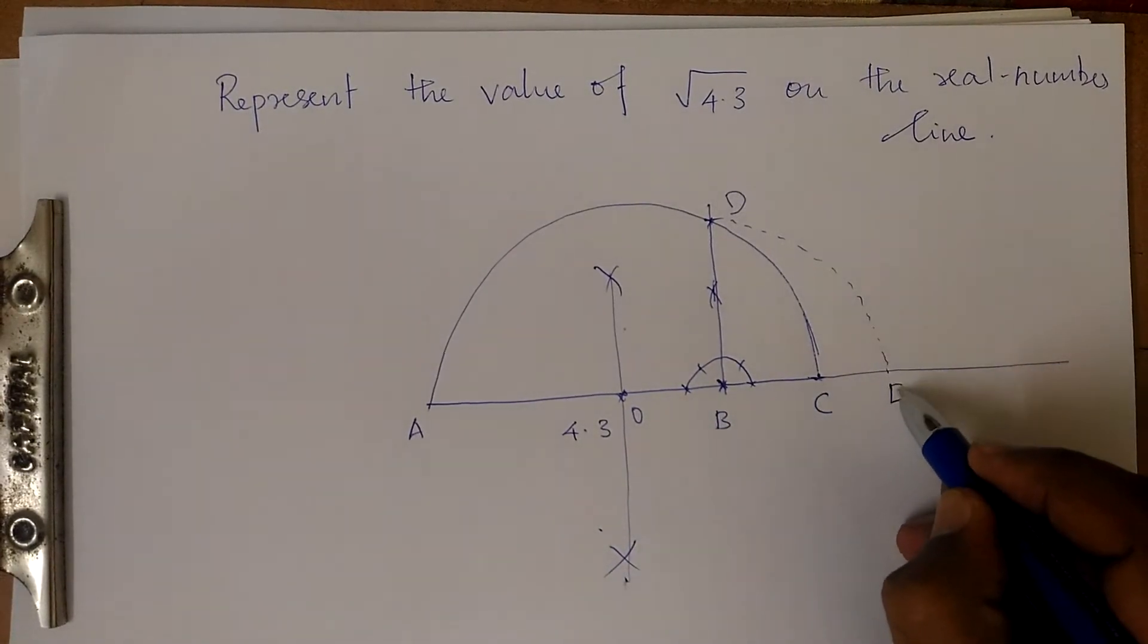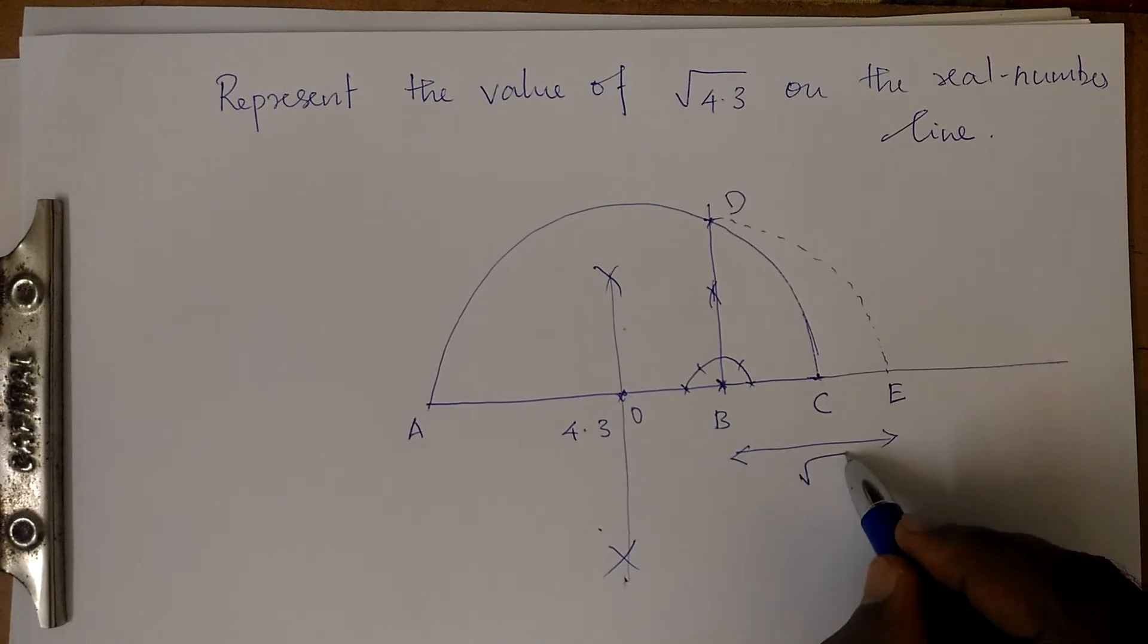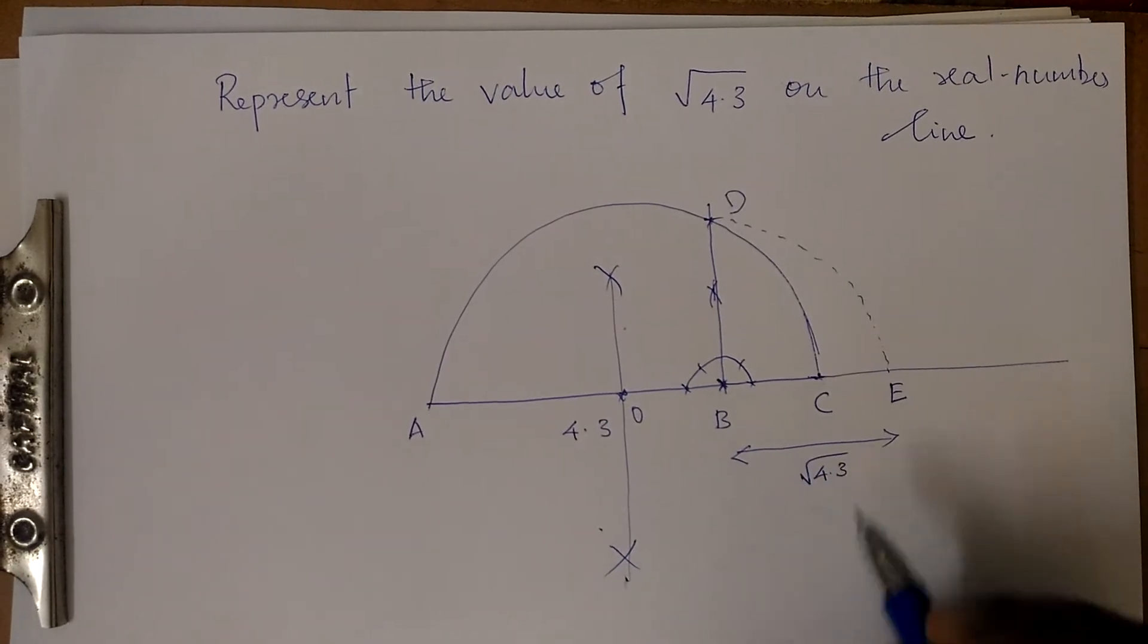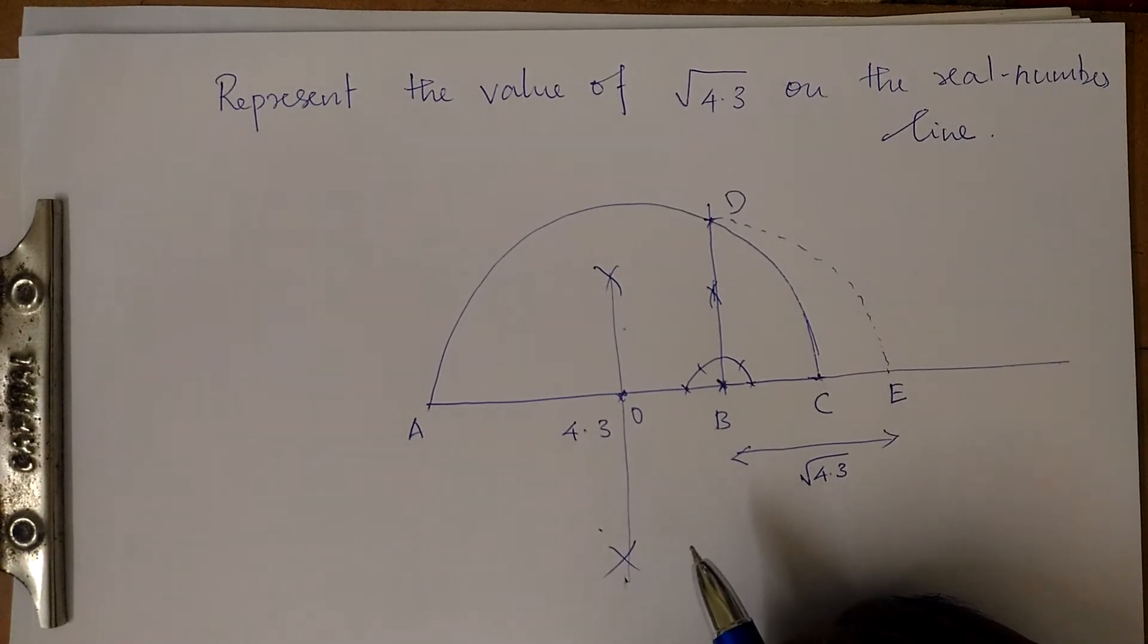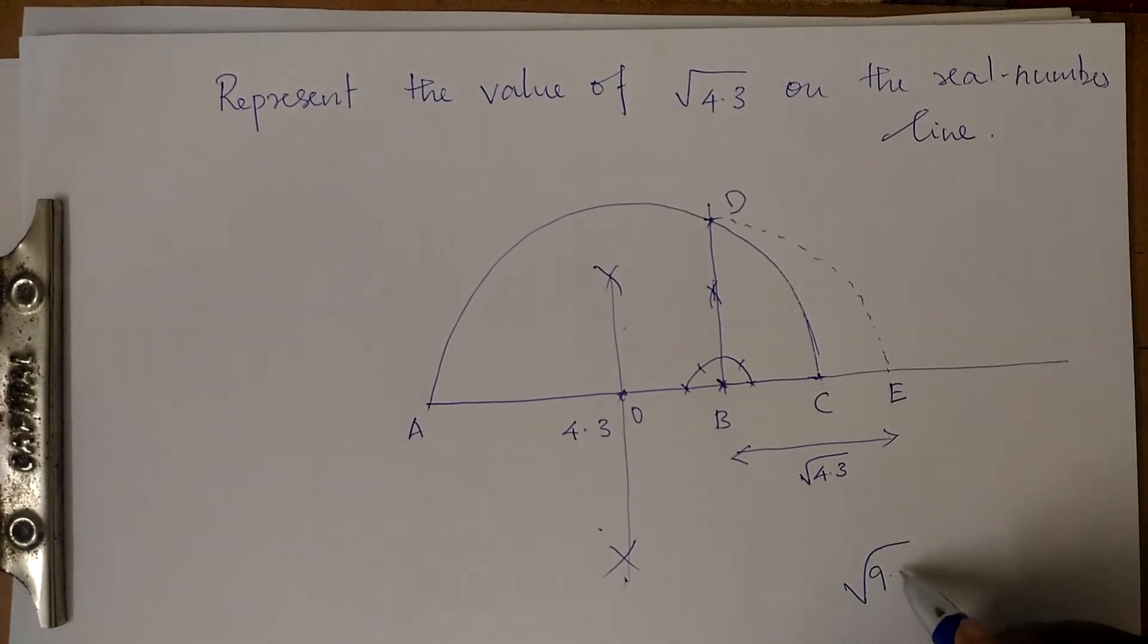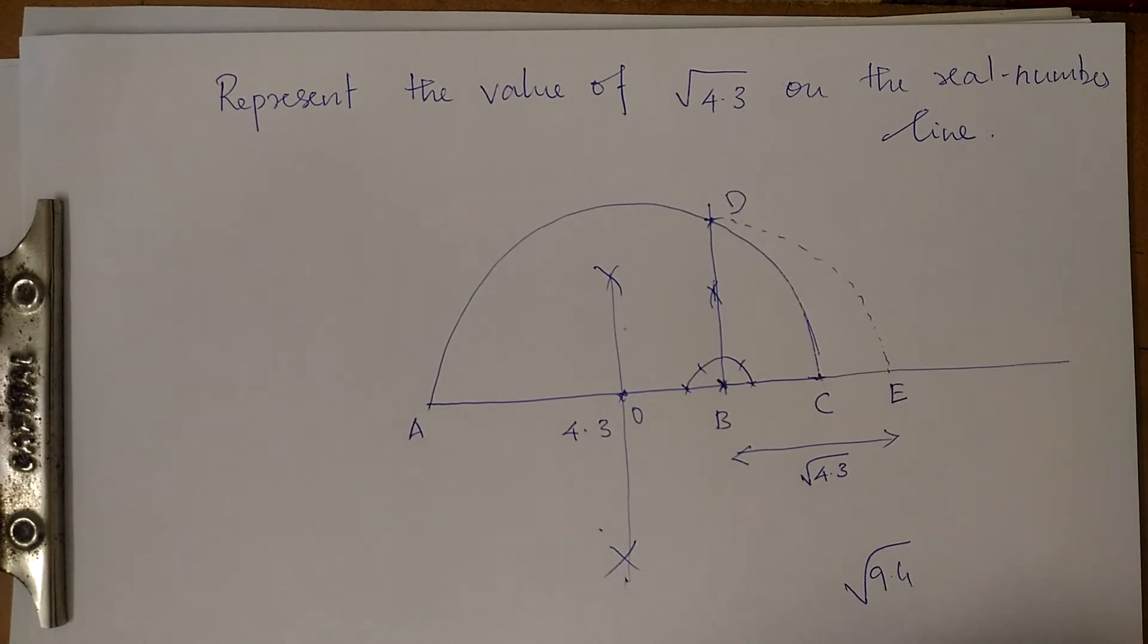The length BE is √4.3. In the same way, you can find the square root of any other number like √9.4 or √9.3. This is the method you would use. Hope you understood this. If you have any doubts, you can contact me. Thank you.